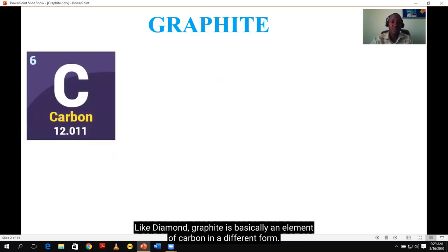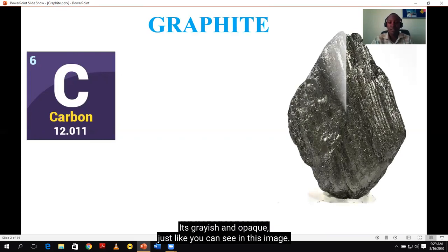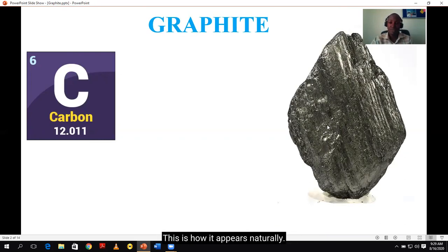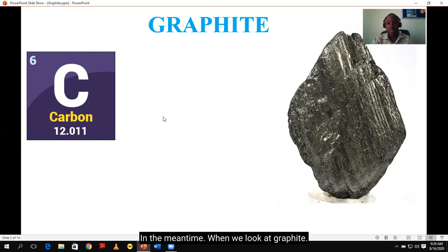Like diamond, graphite is basically an element of carbon in a different form. It's grayish and opaque, just like you can see in this image. This is how it appears naturally. It's extracted from the ground, however it takes years to be formed. It's China which has the highest sources of graphite in the meantime.